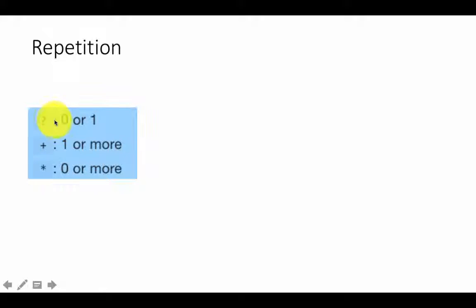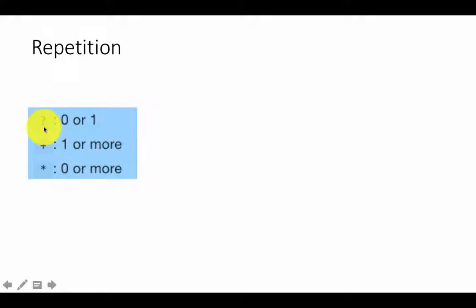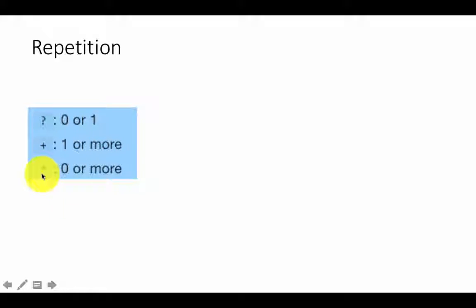There are three important symbols used when we talk about repetition: the question mark, plus, and star. The question mark matches a character or pattern zero or one time. Plus matches one or more times. Star matches zero or more times. We'll see examples of how we can use these kinds of patterns.